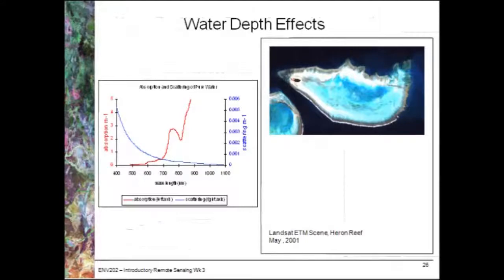If we look at the effects of water depth to start with, have a look at the graph on the left hand side. We've got wavelength on the x-axis and the red graph shows the amount of absorption of light at different wavelengths. You can see that as you increase the wavelength you also increase the absorption of light. But you also can see that as you increase the wavelength you decrease the scattering of light.